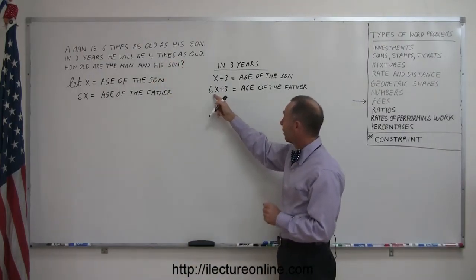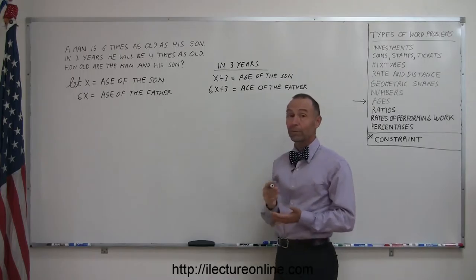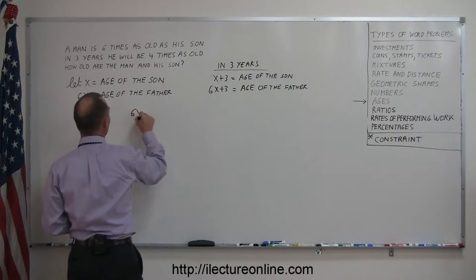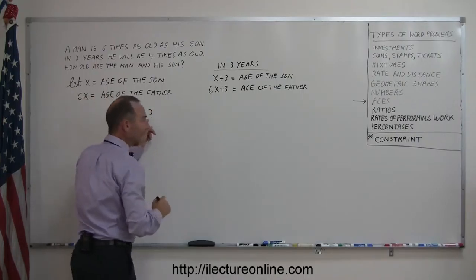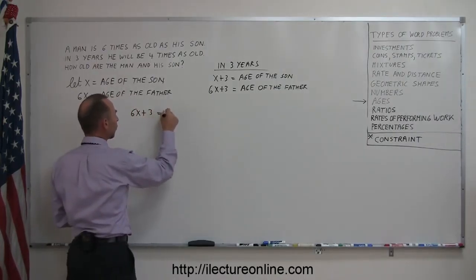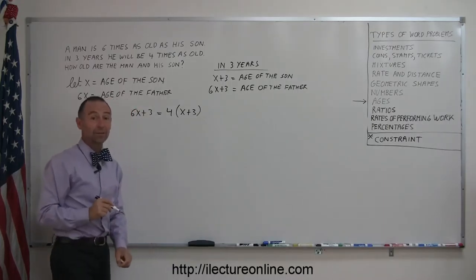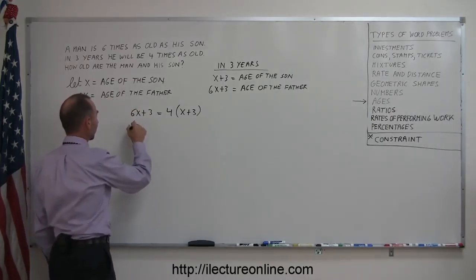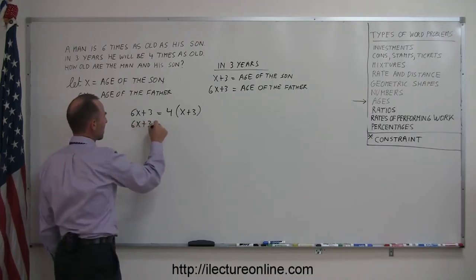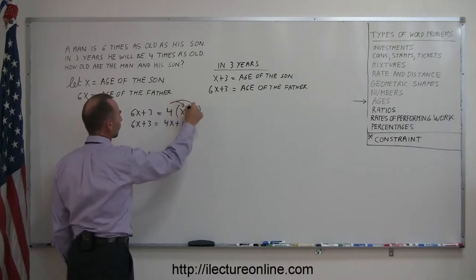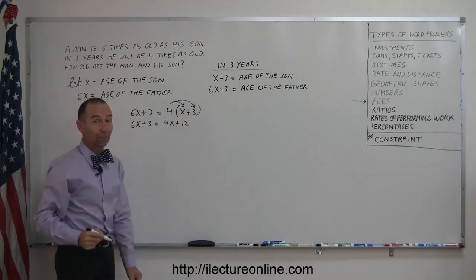Because now we can say that in three years he'll be four times as old as the son. That means that this age for the father will be four times as big as this age for the son. So we can say that 6x plus three, which is the age of the father in three years, will be equal to four times the age of the son, which is x plus three. And now we're ready to solve this equation. First thing is get rid of parentheses. 6x plus three equals 4x plus twelve.